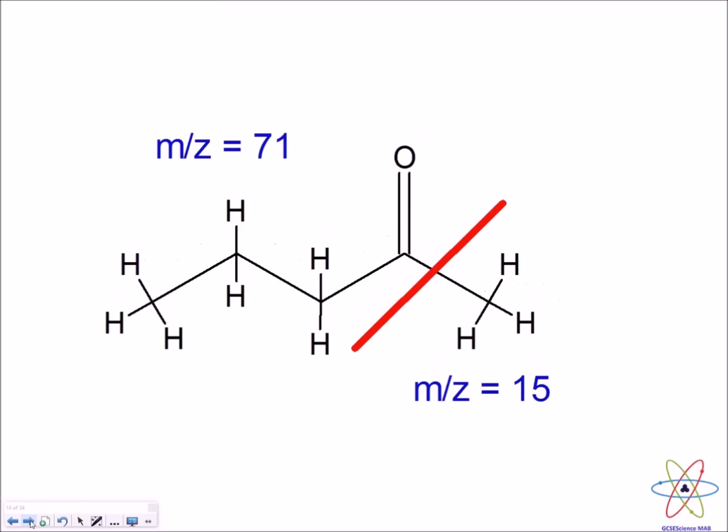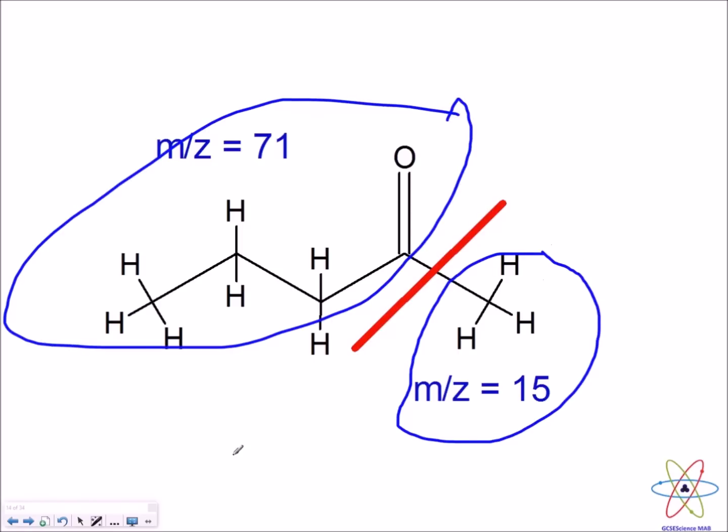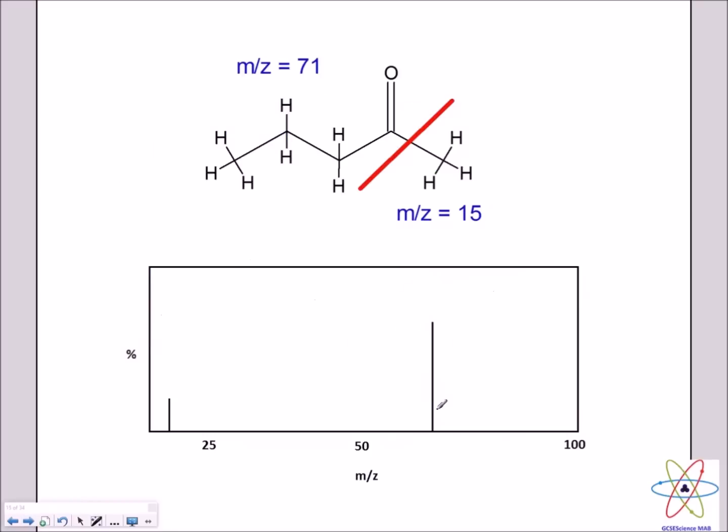So, what we'll end up with is something like this. We have a mass to charge ratio of 71 for this portion of the molecule, and for this portion, the CH3 has a mass to charge ratio of 15. In the mass spectrum, it will look something like this. You can quite clearly see that the portion of the molecule with the carbonyl group has got a taller peak than the one that's got no carbonyl group, which is the methyl group.